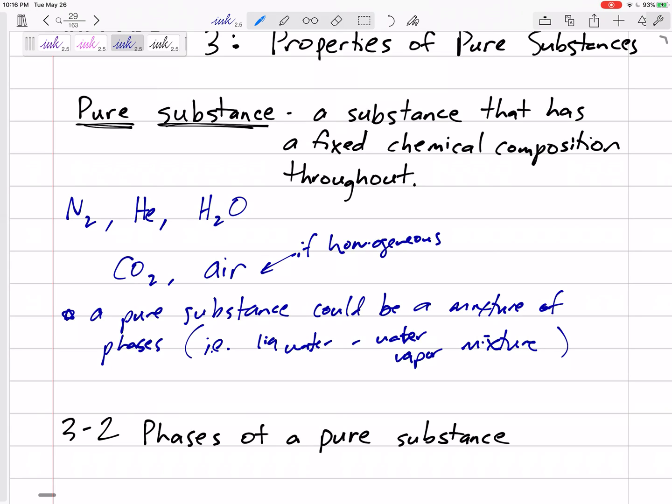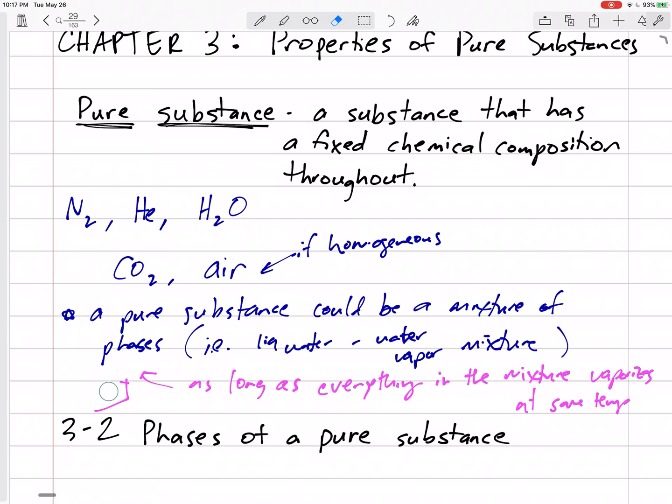So a pure substance could be a mixture of phases as long as everything in the mixture vaporizes at the same temperature. For example, air, if air was somehow changing phases, all the different chemicals that are in the air might vaporize at different temperatures. And so if one vaporizes before the other, then it's no longer a constant fixed composition throughout.